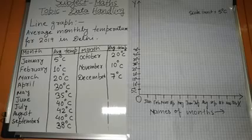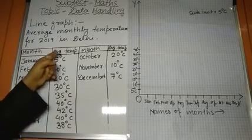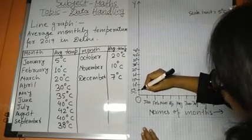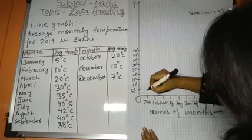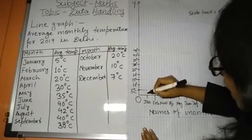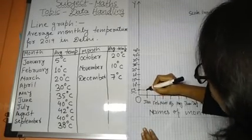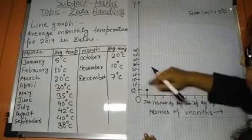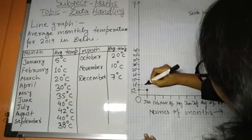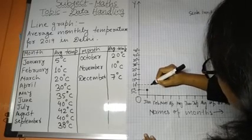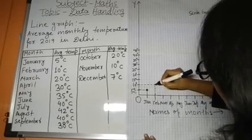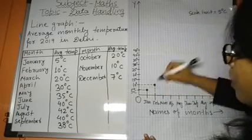Now, I have to place the point. In January month, 5 degrees. From 5 degree side, we will come to right and from January side, we will go up. This point is for January. Now, come to February, 10 degrees. From y-axis, we will come to right. From x-axis, we will go up. This is for February month.